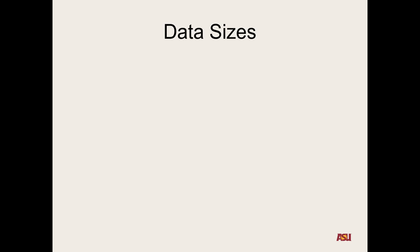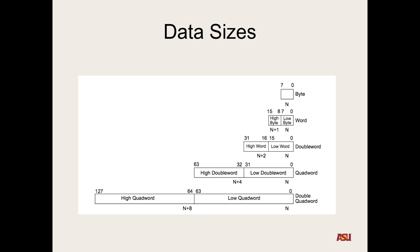Data sizes — we think about things in terms of bytes, words, double words. For x86: a byte is 8 bits, a word is 2 bytes (16 bits), a double word is 32 bits, and there are also quad words and double quad words. How many physical bytes each term represents can vary between architectures, so it's important to understand what these mean specifically in x86.